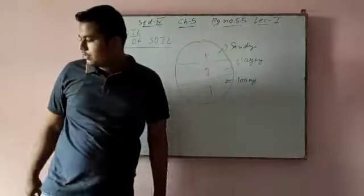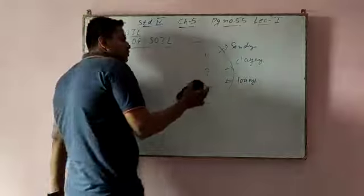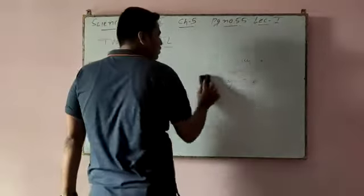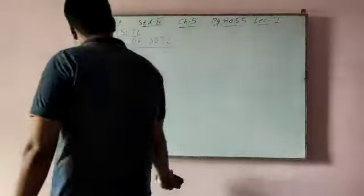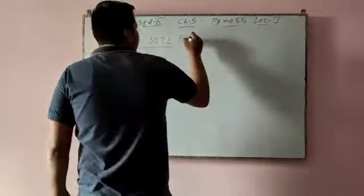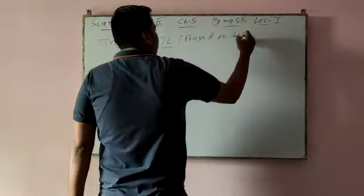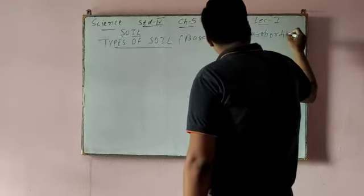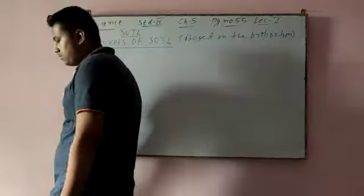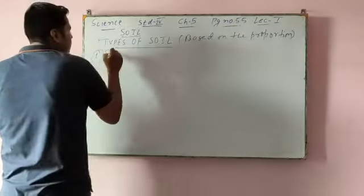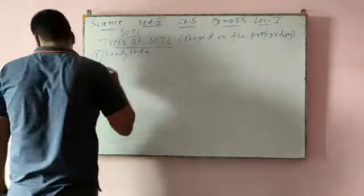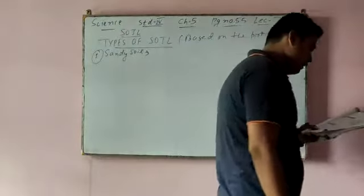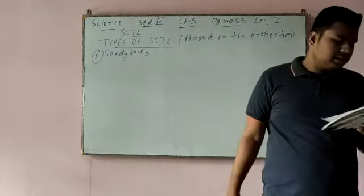So we will see first about sandy soil. Based on the proportion of different types of soil, three types of soil are here. First is sandy soil. This soil has a greater proportion of sand particles in it and is rough and gritty in texture.